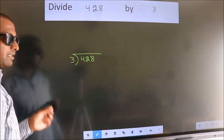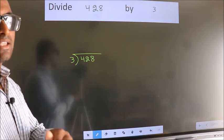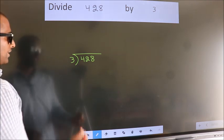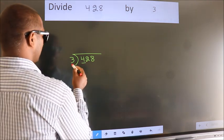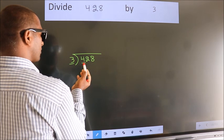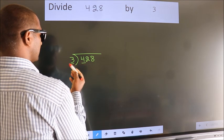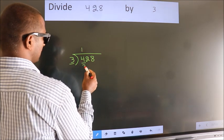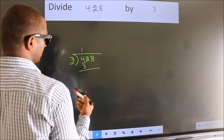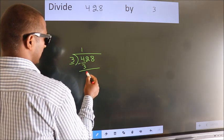This is your step 1. Next, here we have 4, here 3. A number close to 4 in 3 table is 3 times 1 is 3. Now, we should subtract. We get 1.